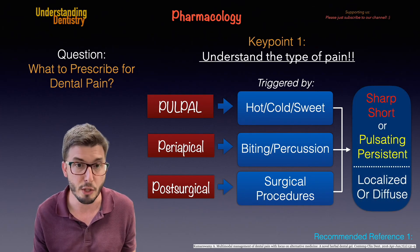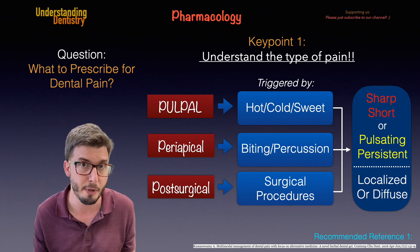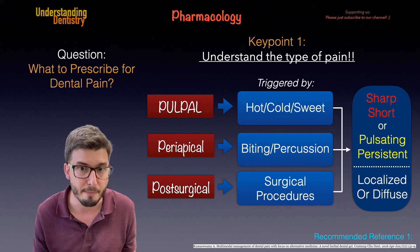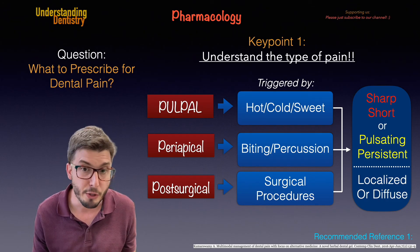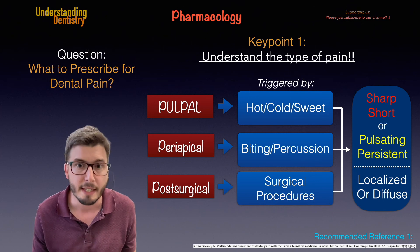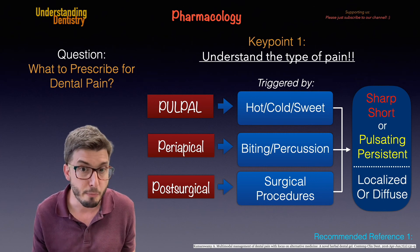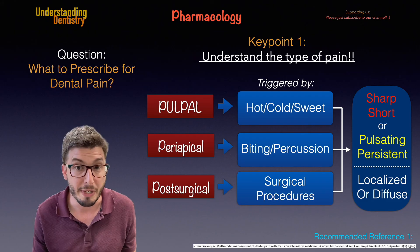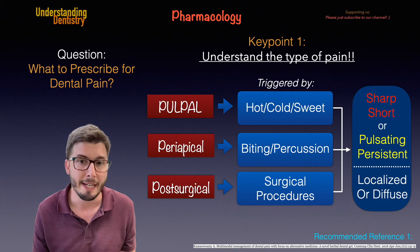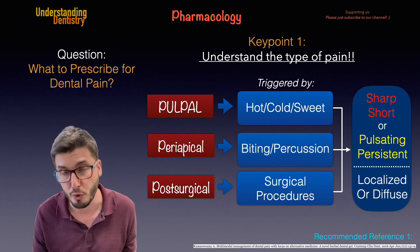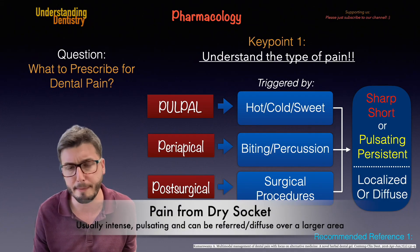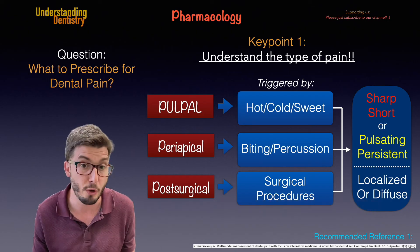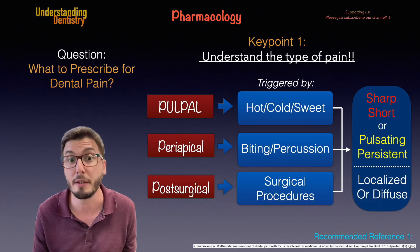We may have sharp and short pains — for example, in the case of a root fracture, a periapical pain that presents as sharp. If we are talking about a pulsating or persistent pain, that can occur in more chronic situations. The pain can also be localized or diffuse — in the case of a dry socket, for example, we may have diffuse pain that is also pulsating and persistent.